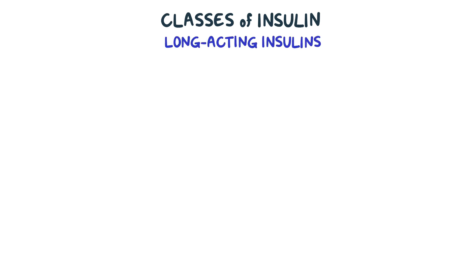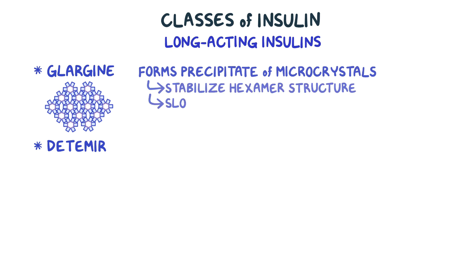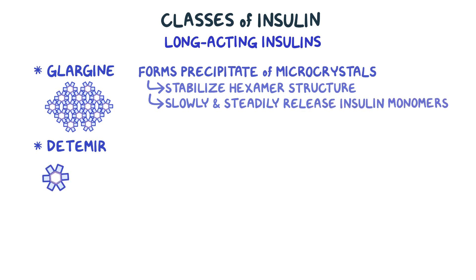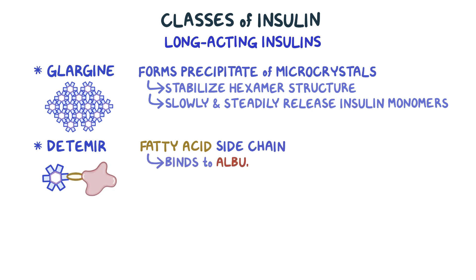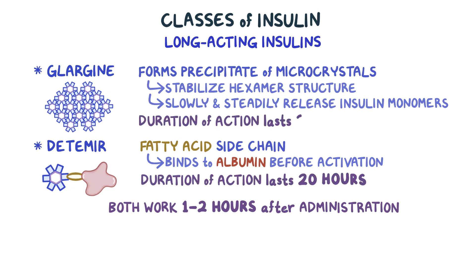We have the long-acting insulins, which include insulin glargine and detemir. Glargine is unique because once it's injected, it forms a precipitate of microcrystals at the site of injection, which significantly stabilizes insulin's natural hexamer structure. This allows it to slowly and steadily release insulin monomers into the bloodstream. On the other hand, detemir has a fatty acid side chain which allows it to bind to albumin for a time before dissociating again and becoming active. Both of these long-acting insulins begin to work within one to two hours of administration. Detemir typically lasts for around 20 hours, whereas glargine lasts up to 24 hours. These medications do not have a peak effect.